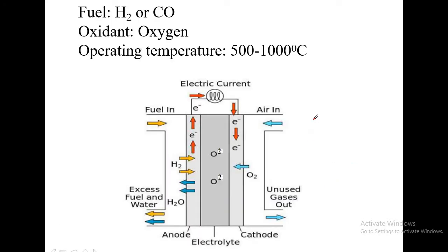Let us look at the schematic picture of the solid oxide fuel cell. Just like the methanol-oxygen fuel cell, instead of methanol, here we introduce hydrogen or carbon monoxide as the fuel through the top inlet. So there is fuel flexibility — either hydrogen or carbon monoxide can be used. These are the electrodes: anode and cathode.